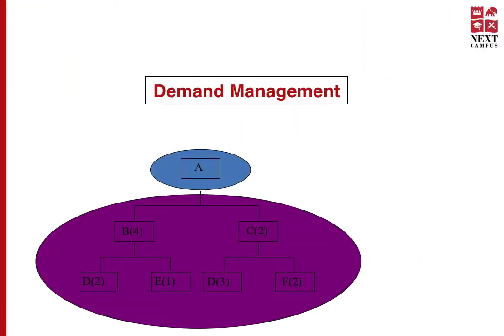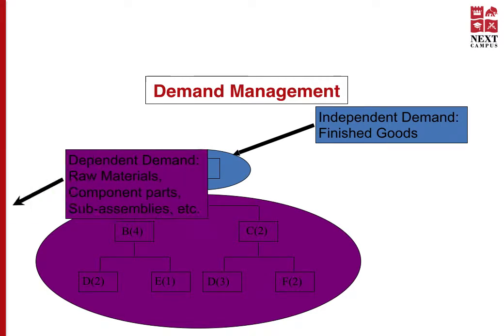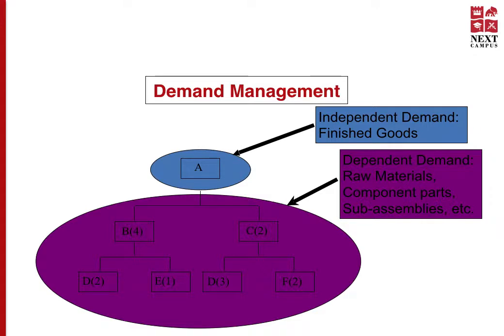For demand management to be successful, we need to identify the two elements in demand. The first is independent demand and the second is dependent demand. Independent demand is demand for a finished product or service that is directly visible to the customer. Dependent demand is demand for the components that go into manufacturing the finished product or service.